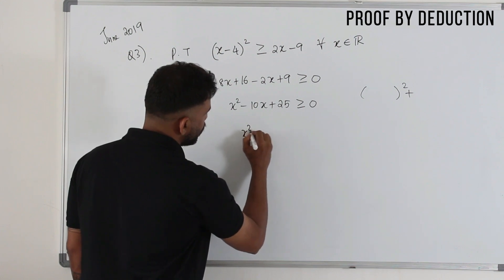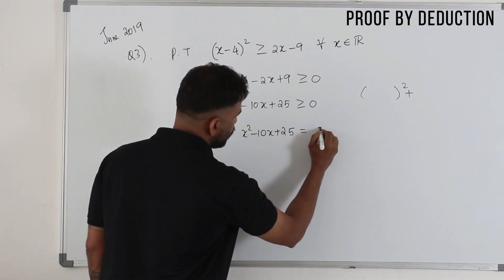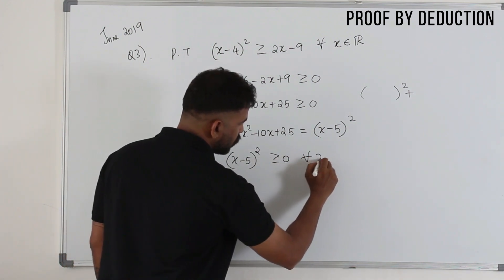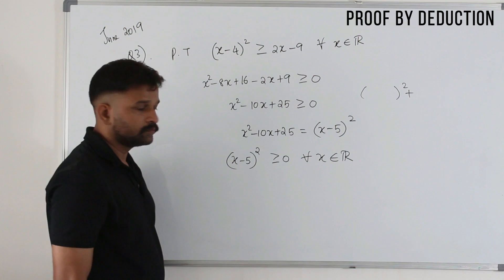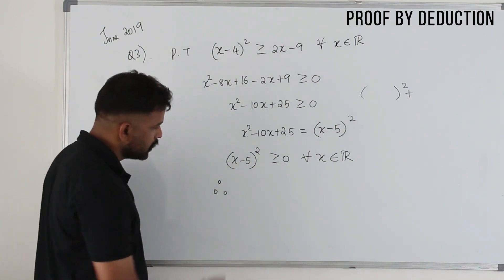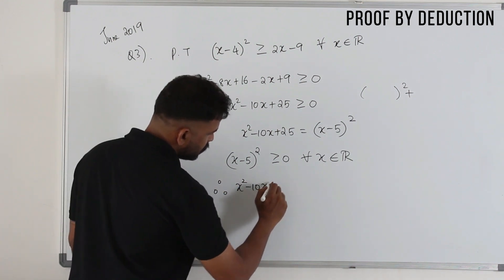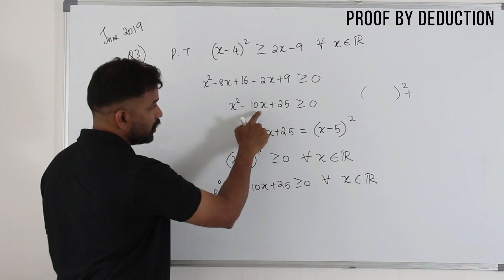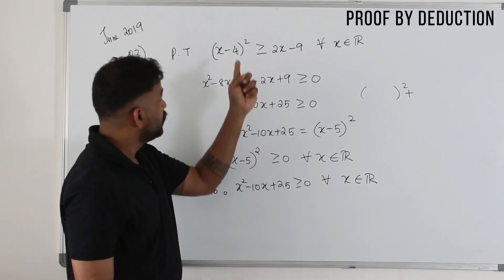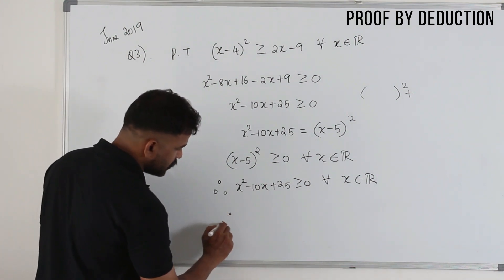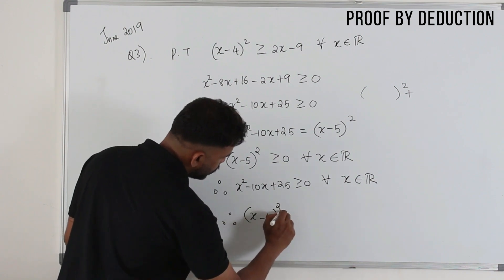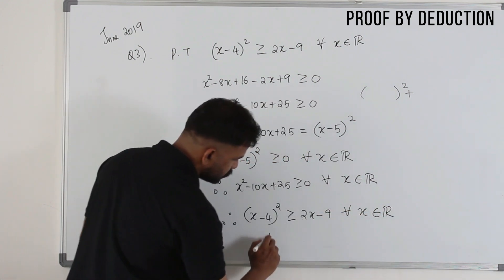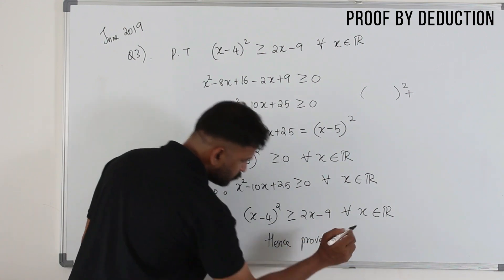We can write x squared minus 10x plus 25 as x minus 5 whole square. Then x minus 5 whole square is always greater than or equal to 0 for all x belonging to R. So x squared minus 10x plus 25 is greater than or equal to 0 for all x, and therefore x minus 4 whole square is greater than or equal to 2x minus 9 for all x belonging to R. Hence proved.